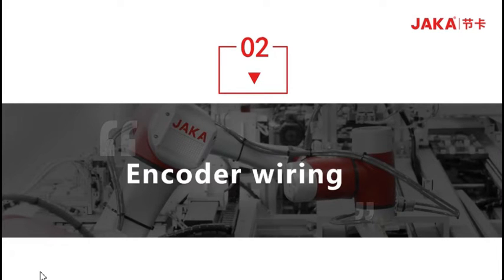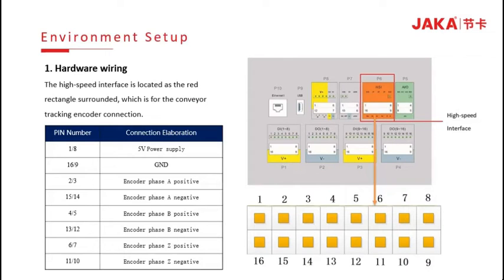Now let's see the encoder wiring of the conveyor belt tracking instruction. On the picture on the right, the red rectangle marks the high-speed interface, which is for the conveyor tracking encoder connection. The table below is for the terminal rank connection. Pin 1 and pin 8 are for the 5V power supply positive connection.